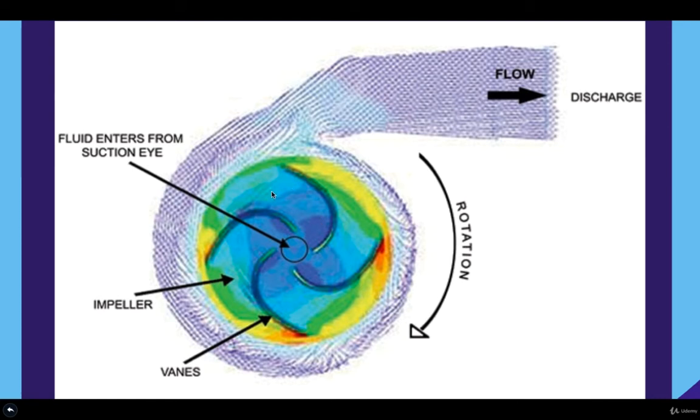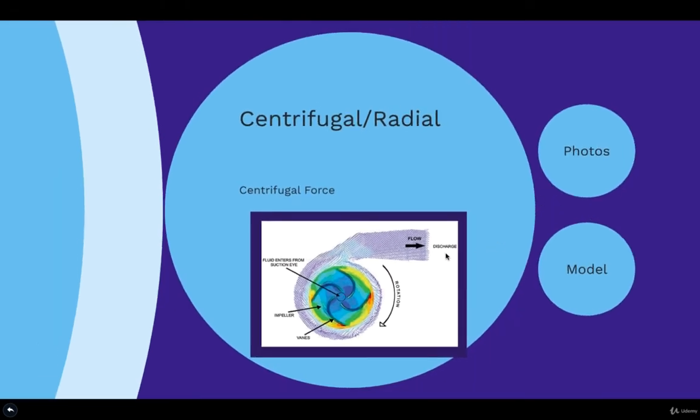We have the blades. It will start moving the fluid, and because of the centrifugal force, you will increase the work and pressure content, and then you will have a higher pressure system. So the discharge will have much more velocity or pressure.